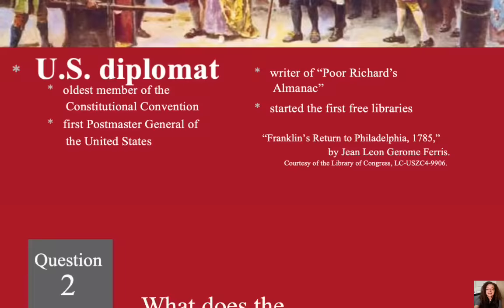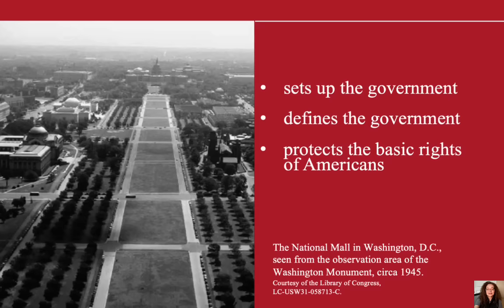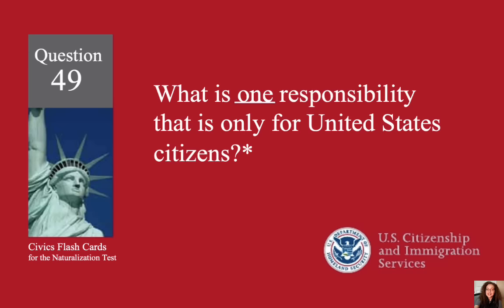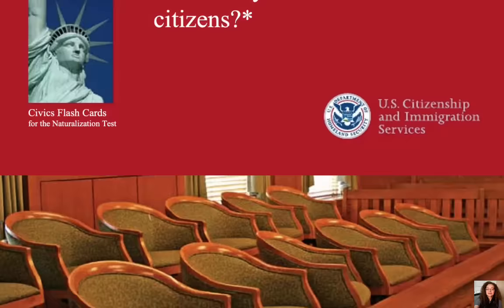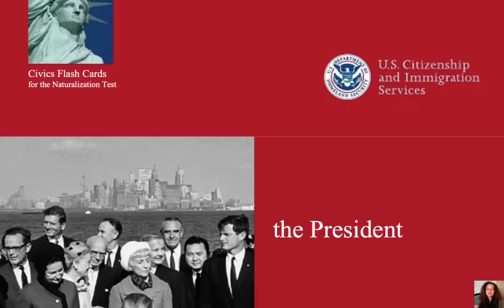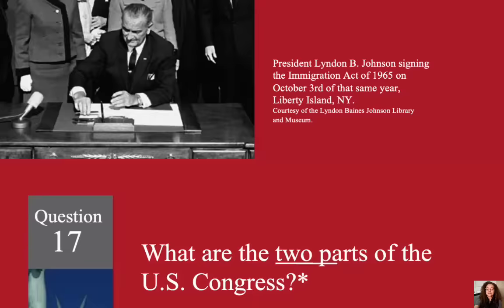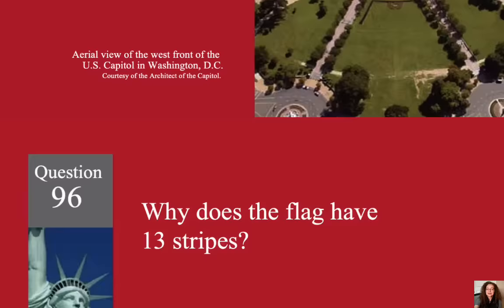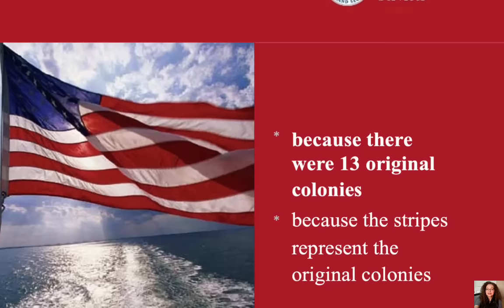What does the Constitution do? Sets up the government. What is one responsibility that is only for United States citizens? Vote in a federal election. Who signs bills to become laws? The President. What are the two parts of the U.S. Congress? The Senate and House. Why does the flag have 13 stripes? Because there were 13 original colonies.